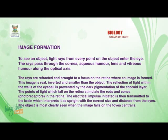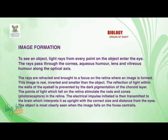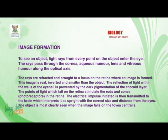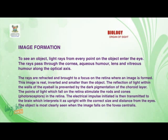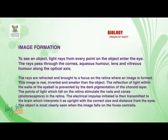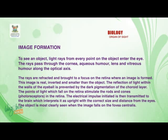The points of light which fall on the retina stimulate the rods and cones — the photoreceptors in the retina. The electrical impulse initiated is then transmitted to the brain, which interprets it as upright, with the correct size and distance from the eye. The object is most clearly seen when the image falls on the fovea centralis.